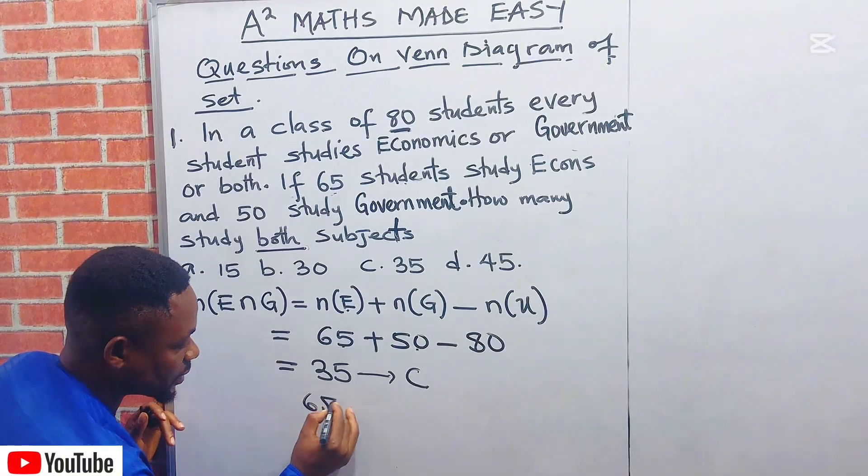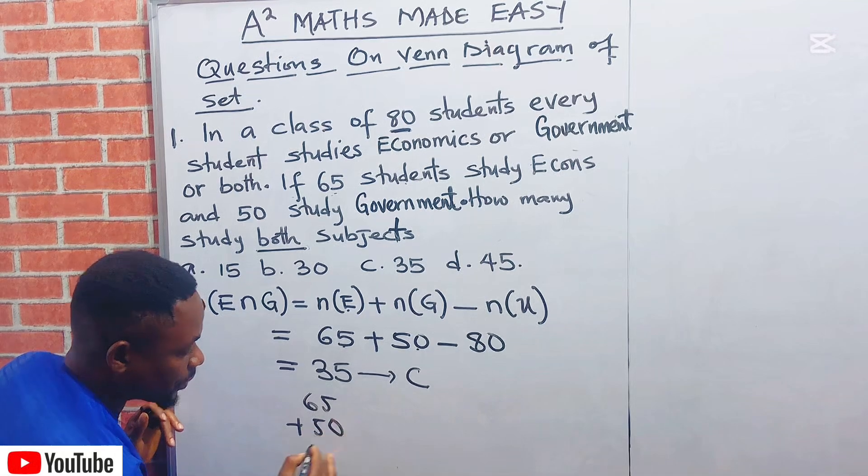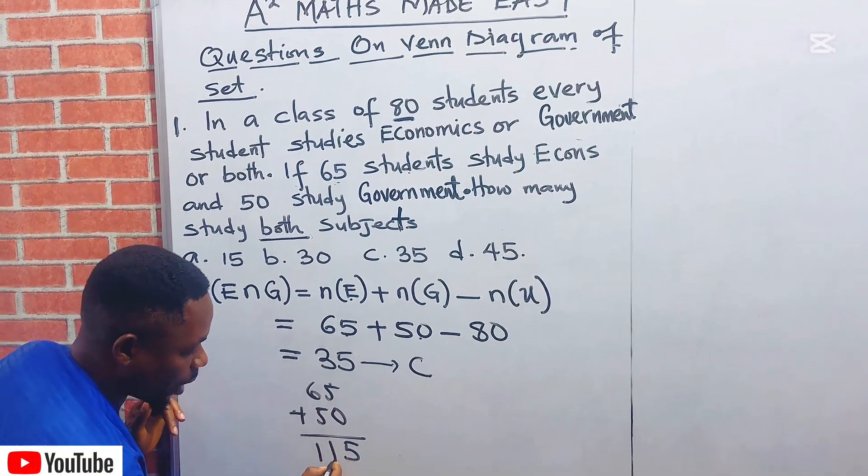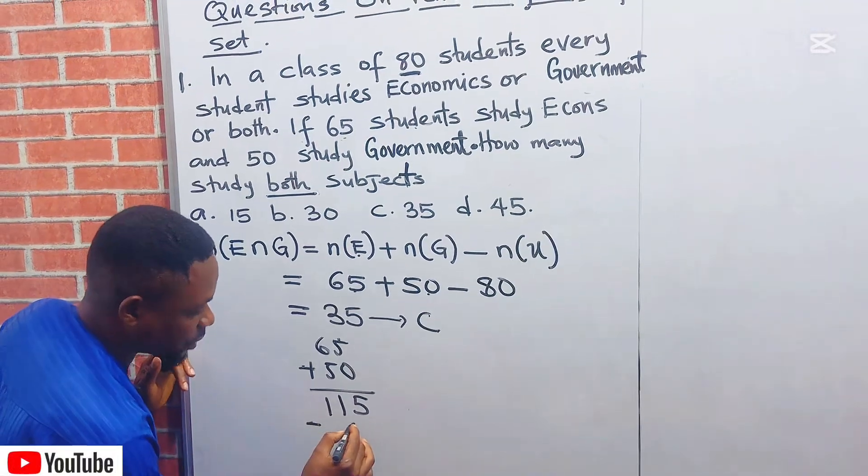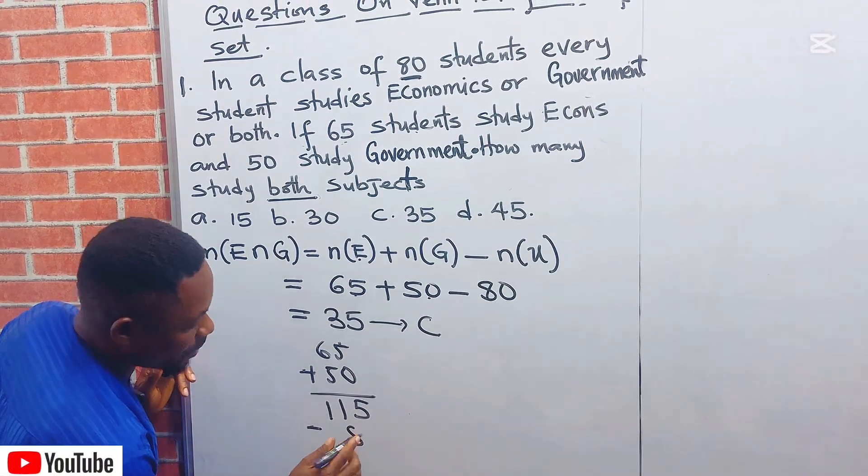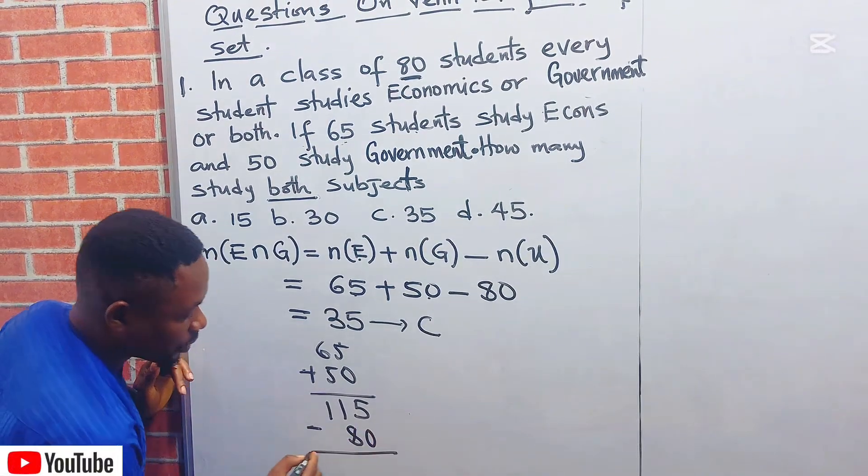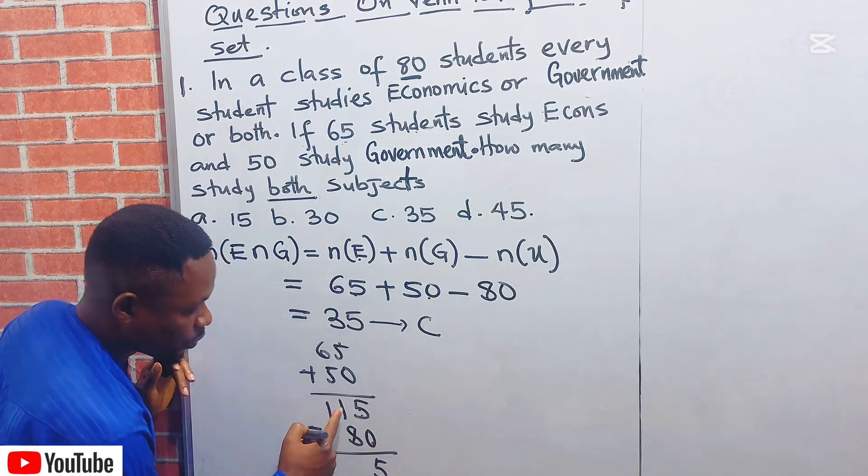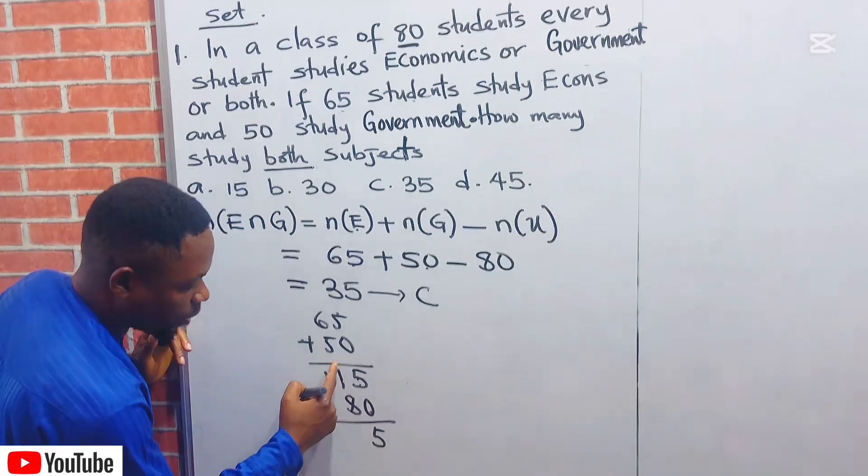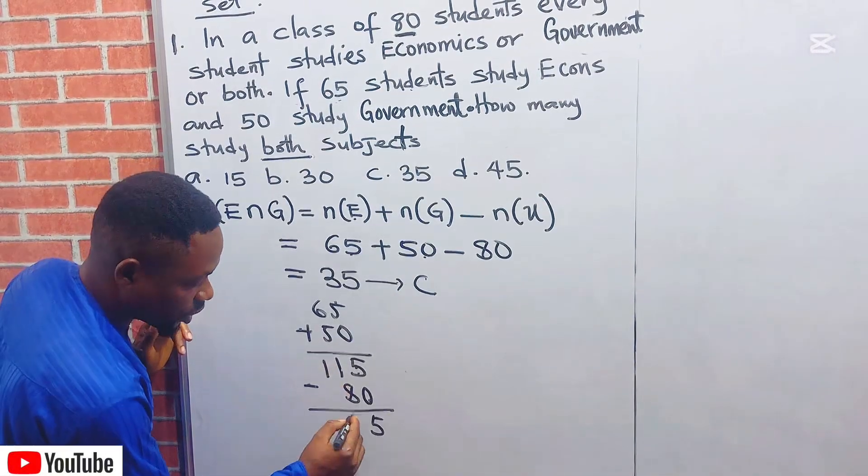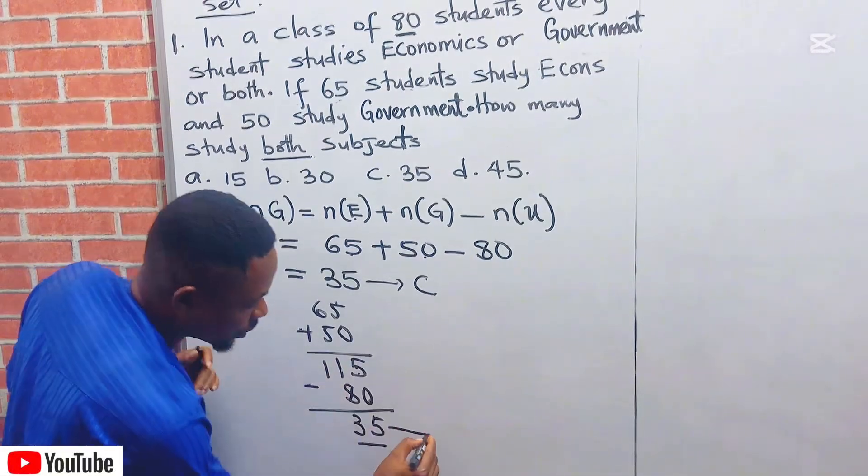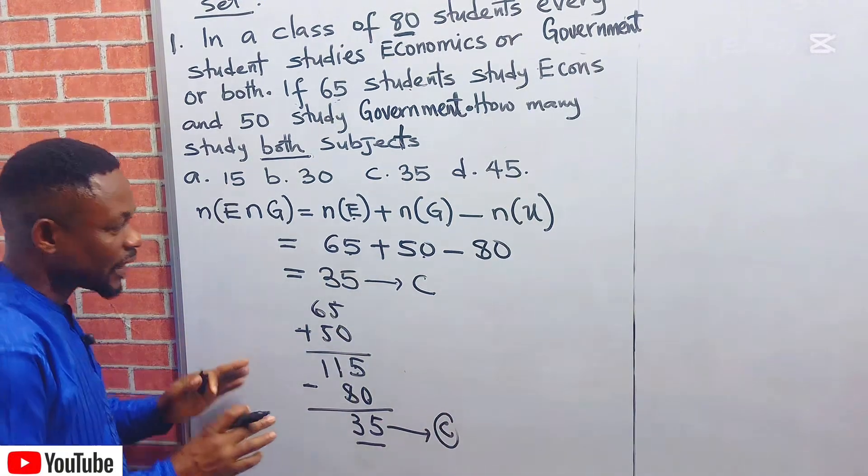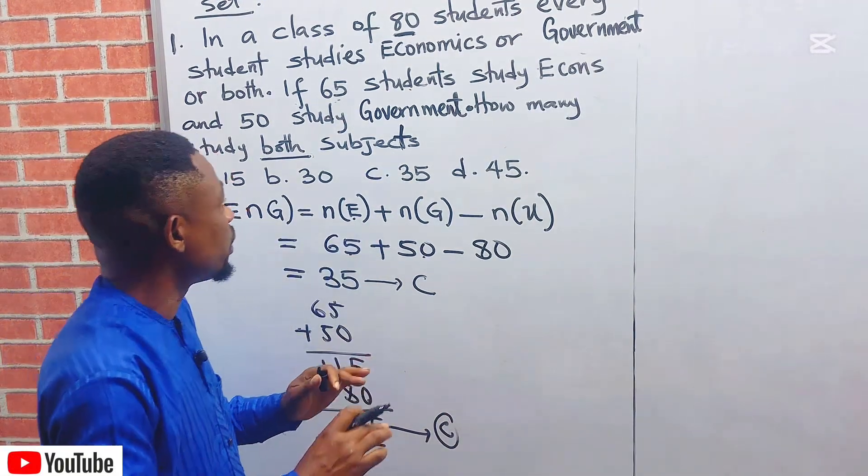I will say 65 plus 50. If you add this, 5 plus 6 plus 5 will give you 115. Then I will now minus it by 80. This 5 minus 0 will give you 5. 1 minus 8 cannot, so borrow one from here, making it 11. 11 minus 8 will give you 35. Which means the correct answer in the option is option C. That is the shortcut of solving for both.